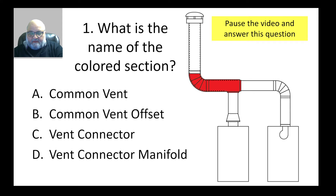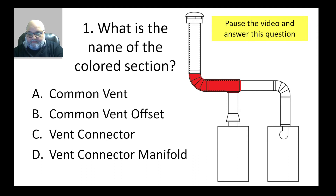In this part of the video we're going to answer 13 questions based on the knowledge we've gathered. The first question — based on the previous video, which you should watch if you haven't — is: what is the name of the colored section? The choices are common vent, common vent offset, vent connector, or vent connector manifold.